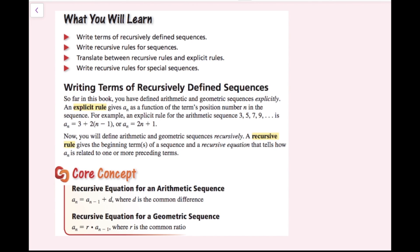So far in this book, you've defined arithmetic and geometric sequences explicitly. An explicit rule gives a sub n as a function of the term's position number n in the sequence. For example, an explicit rule for the arithmetic sequence 3, 5, 7, 9, and so on is a sub n equals 3 plus 2 times quantity n minus 1, or a sub n equals 2n plus 1. Now you will define arithmetic and geometric sequences recursively. A recursive rule gives the beginning term or terms of a sequence and a recursive equation that tells how a sub n is related to one or more preceding terms.